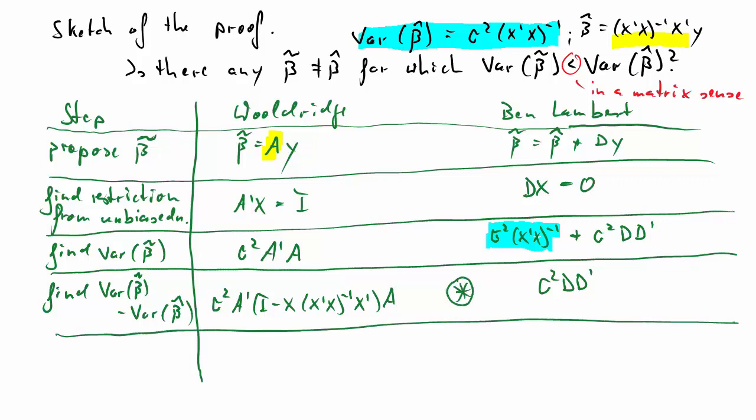Now, we call that the asterisk term because we refer to it in the next step, which is that we establish that that difference is larger or equal to 0 in the matrix sense. We call that positive semi-definite. Wooldridge establishes that from a result that he earlier discussed in appendix D, in particular result D5, a result on idempotent matrices. Look for the details there in the proof.